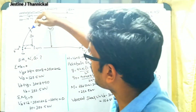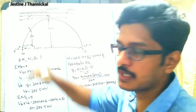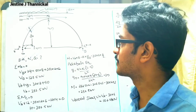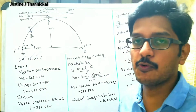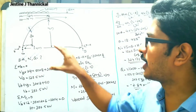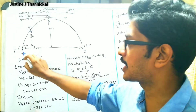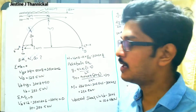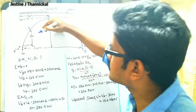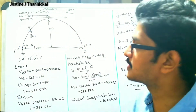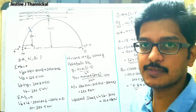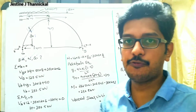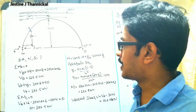We have to find the bending moment, normal thrust, and radial shear at point D, which is 6 meters from the hinged support A. To find these values, we need to find out the reactions VA and VB, the horizontal thrust H, and the vertical distance yd of point D.